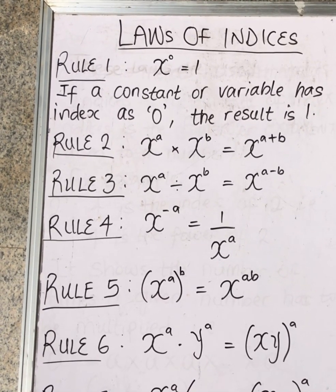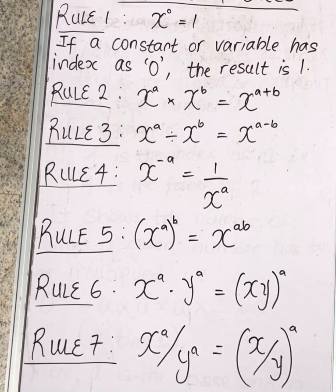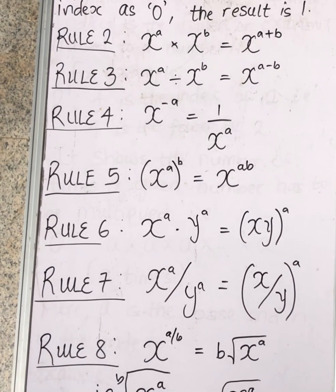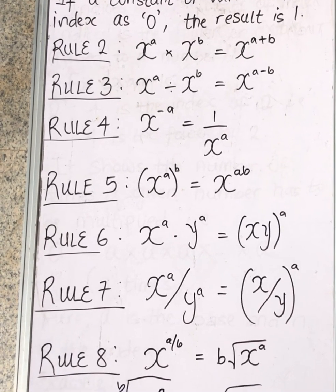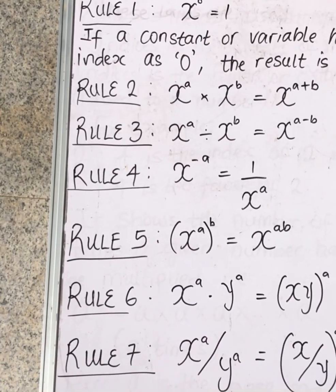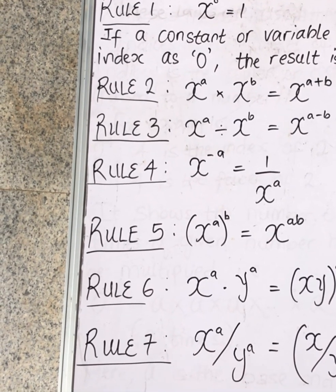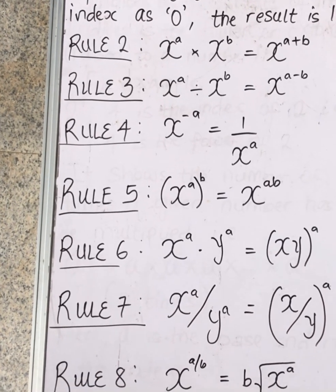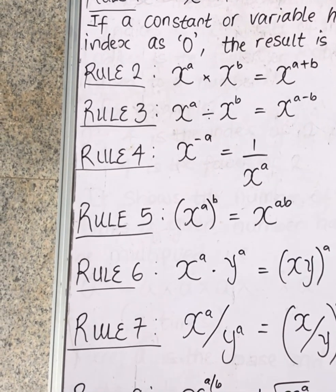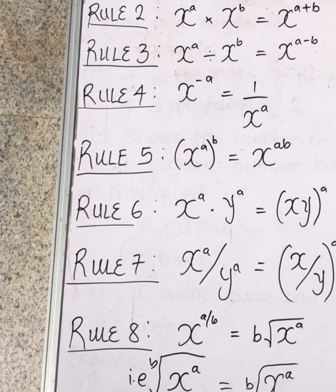Running through our laws again: Rule 1 — anything to the power of zero gives one. Rule 2 — two same bases multiplying with different powers: bring the base together and add the powers. Rule 3 — two same bases dividing with different powers: bring the base together and subtract the powers. Rule 4 — negative power gives the reciprocal. Rule 5 — power raised to another power: multiply the powers. Rule 6 — two different bases multiplying with the same power: bring them together with that power. Rule 7 — two different bases dividing with the same power: bring them together with that power. Rule 8 — fractional power A/B means the B-th root of the base to the power A.